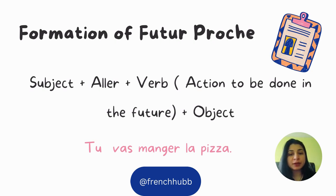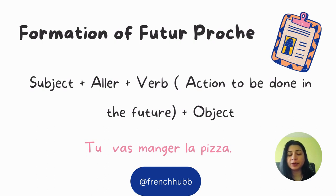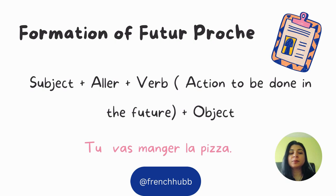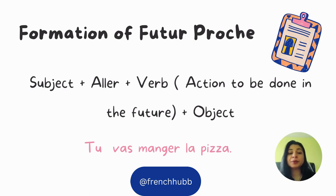First, let's see the formation of futur proche. We use the subject — je, tu, il, elle, nous, vous, ils, elles — plus the conjugated form of the aller verb according to the subject, plus the verb that is the action to be done in the future, plus the object — that is, the rest of the sentence. For example: 'tu vas manger la pizza' — you are going to eat the pizza.